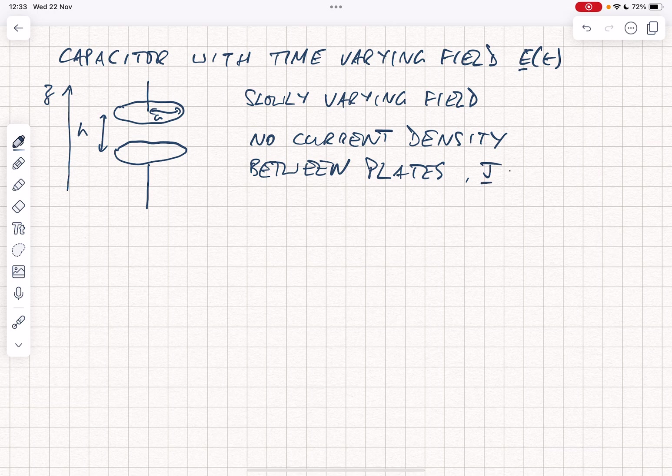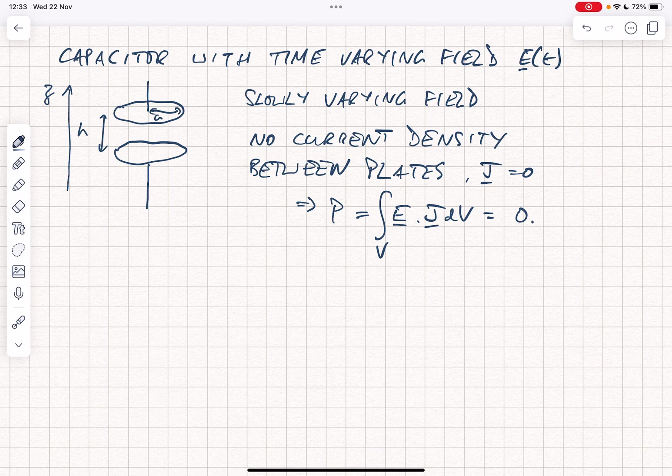So J is equal to zero, which of course implies that P, which is equal to the volume integral of E dot J dV, is going to equal zero. So when we think about Poynting's vector, this tells us that the only terms we're concerned about are the energy density in the field and the flow of energy, so Poynting's vector itself.